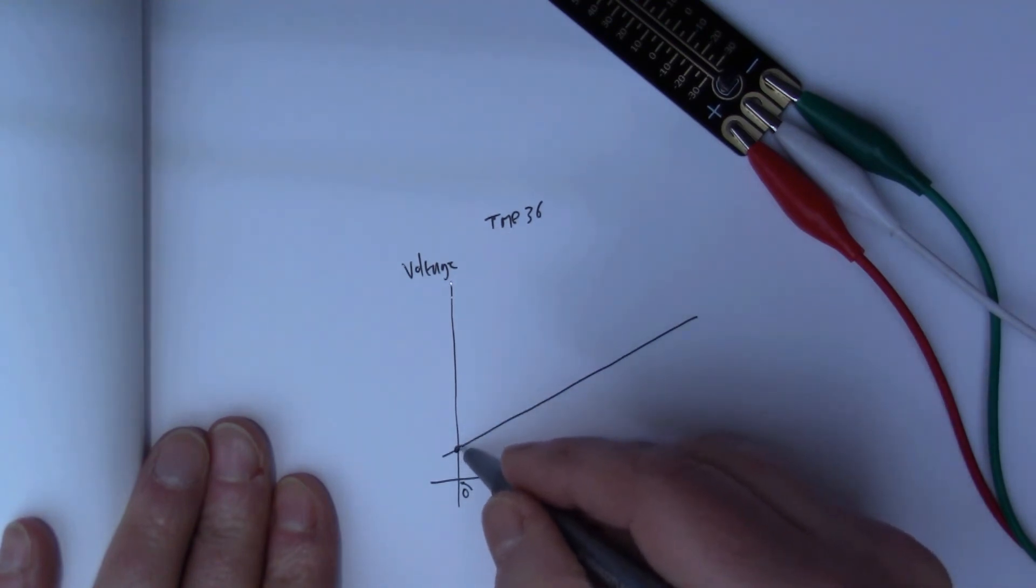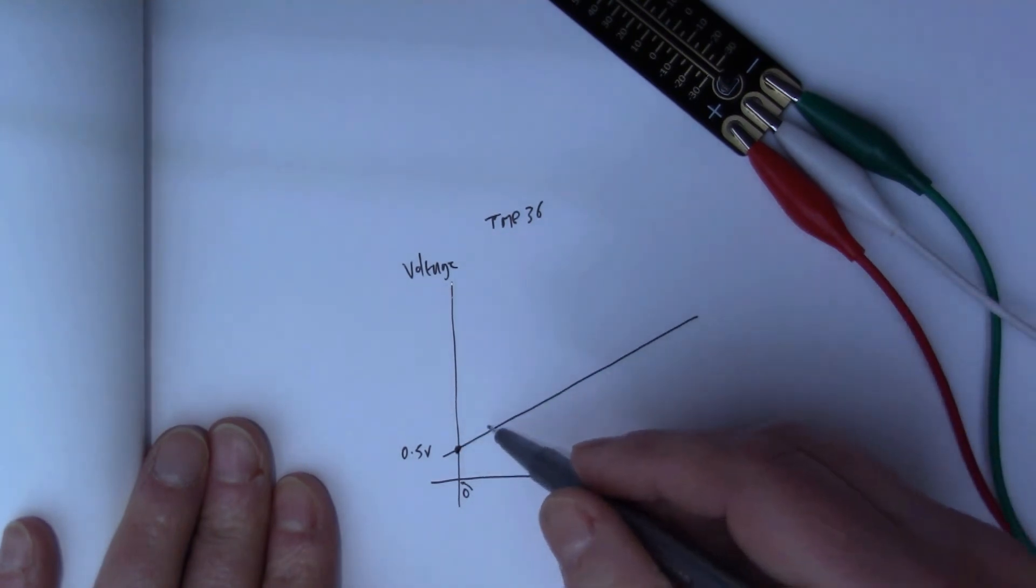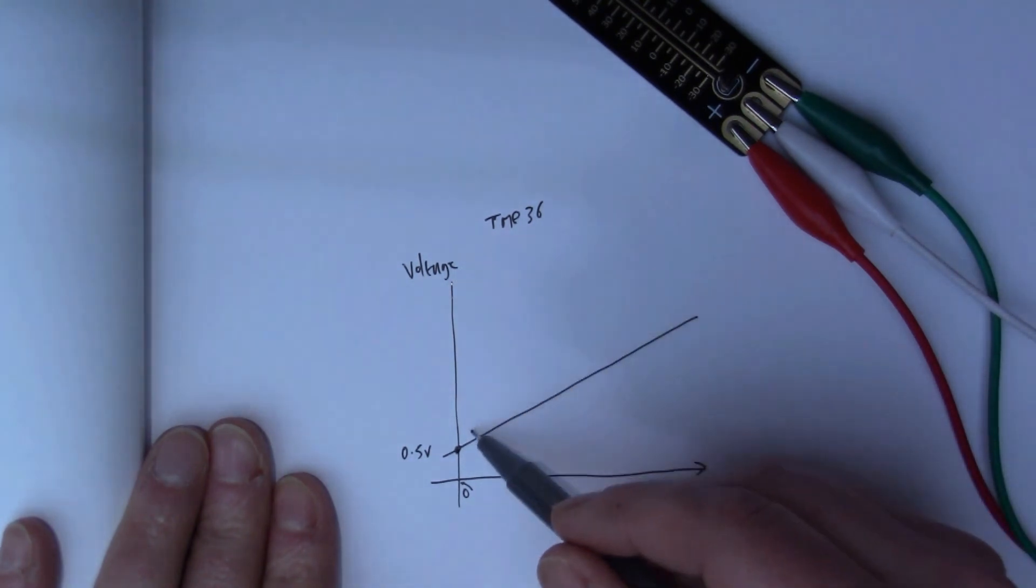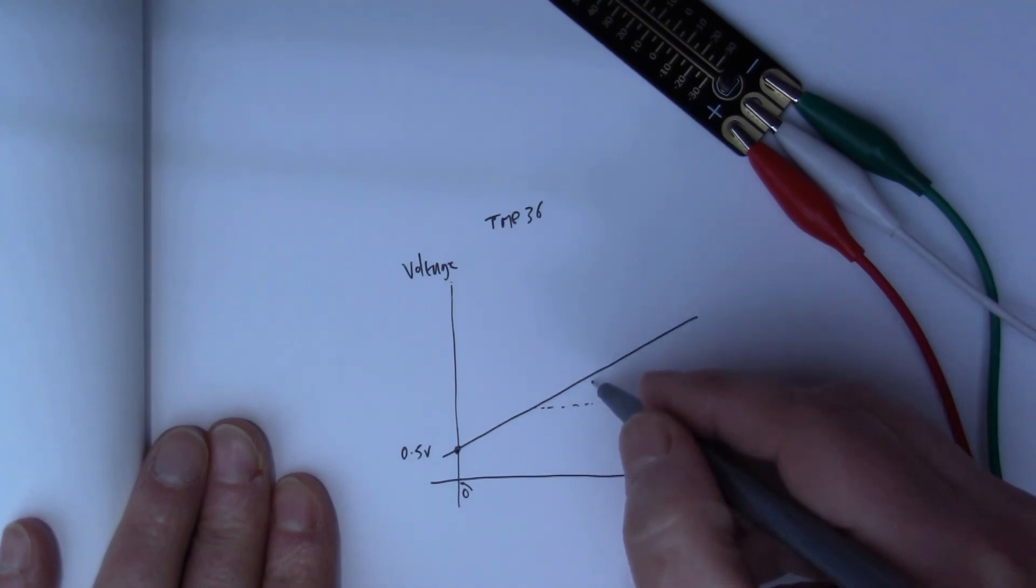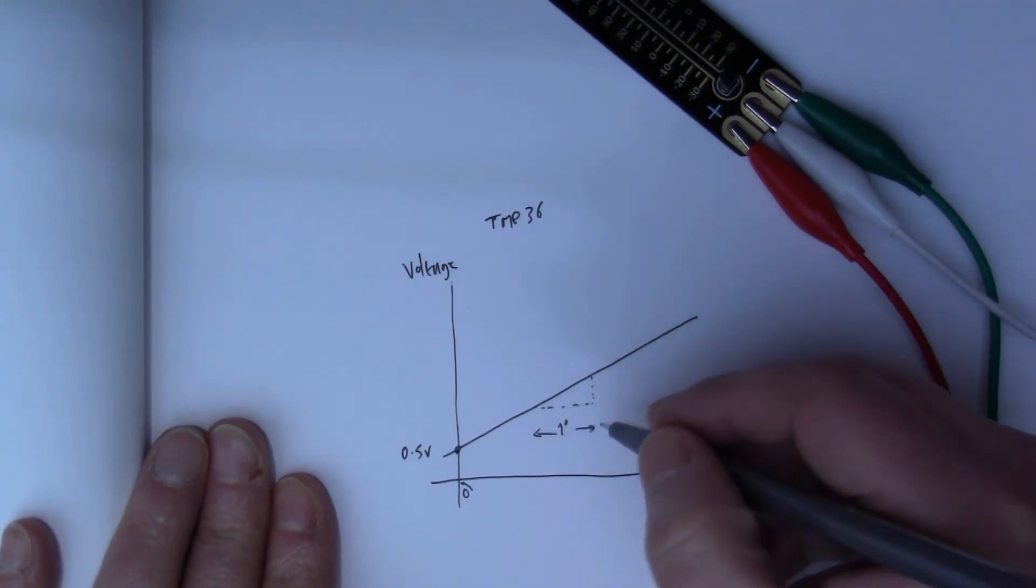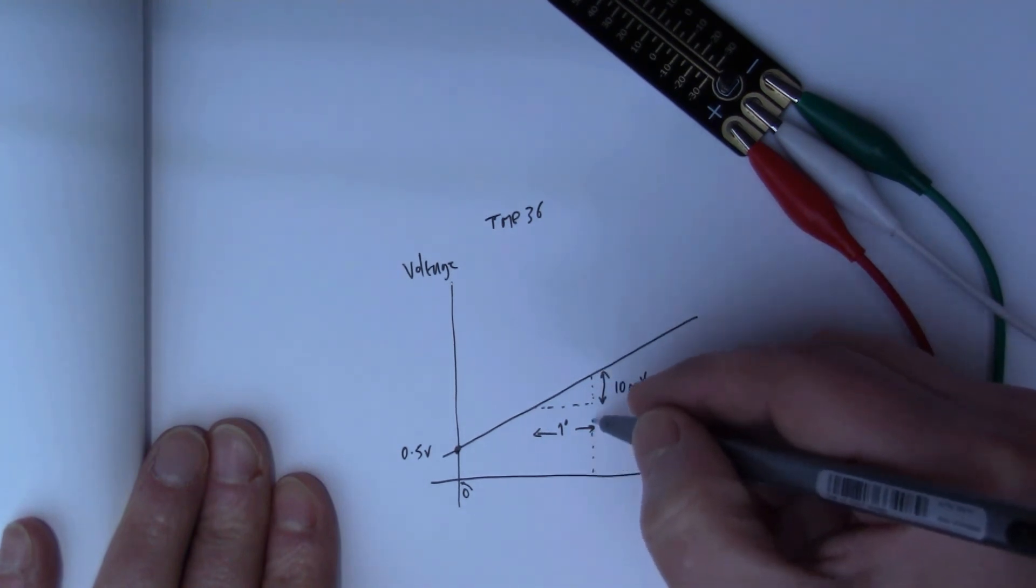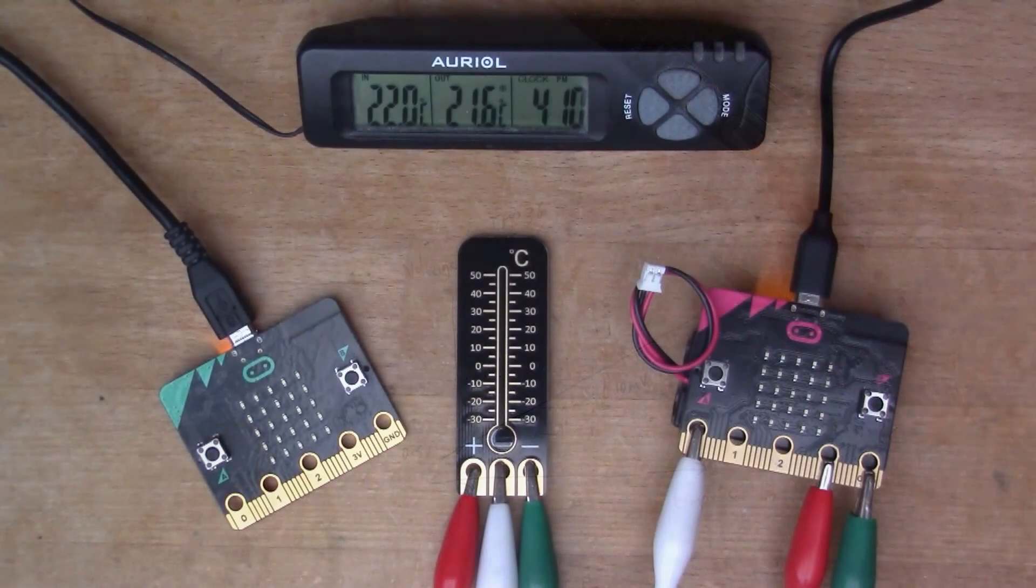That allows the TMP36 to show a small range of negative temperatures as well. At 0 degrees C the output of the device is 0.5 volts, and then there's this straight line. Basically as the temperature increases, the voltage output also increases, so it's completely proportional—the temperature to the voltage. If you look at the gradient of this line, for every one degree centigrade along here, the voltage increases by 10 millivolts. That allows you for any particular value of temperature to make quite a precise measurement via the voltage output.